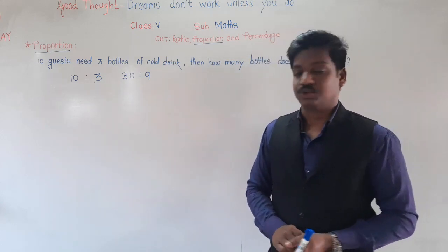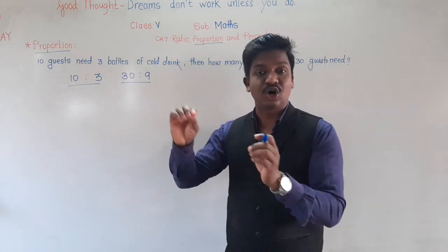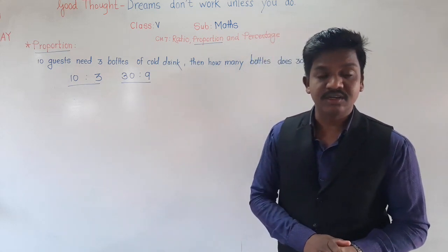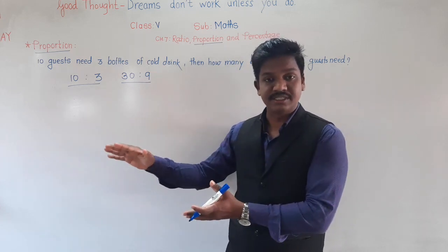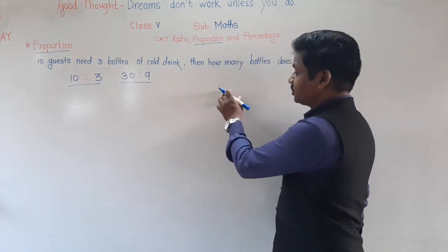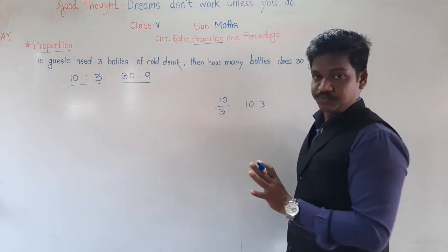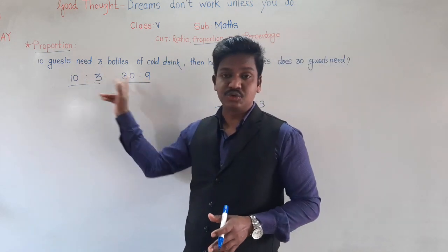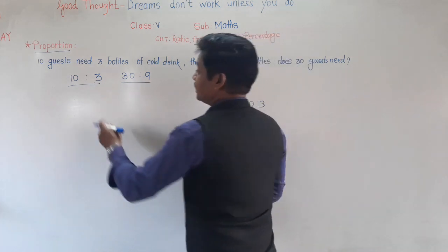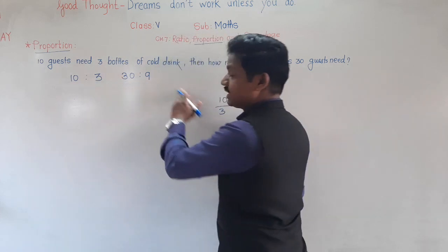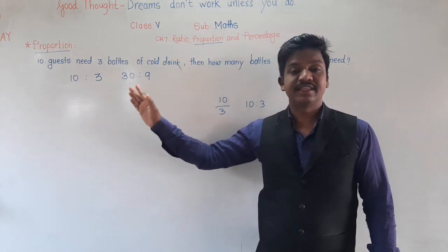When two ratios are equivalent or equal, we say that they are in proportion. Here the new term is introduced: proportion. Ratio means division of two numbers. But when two such ratios are there and they are equal, we say that they are in proportion. We can say they are in proportion only if they are equal ratios.